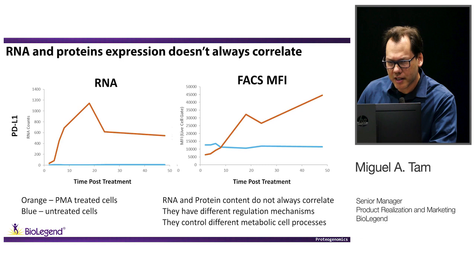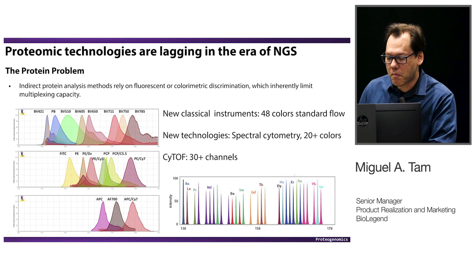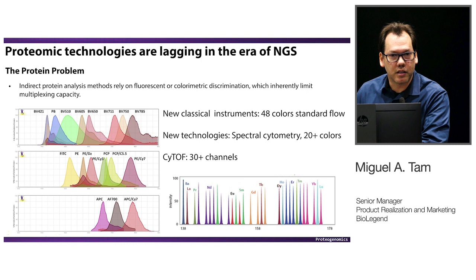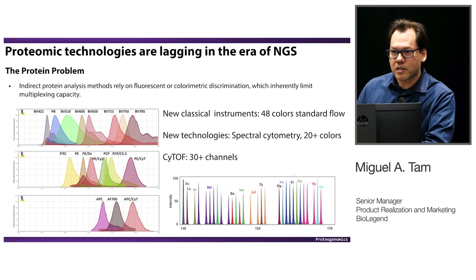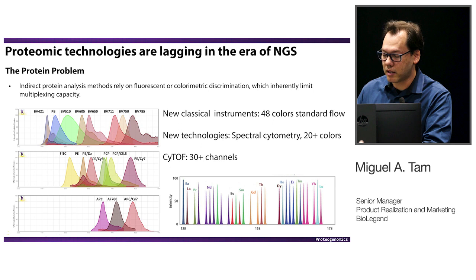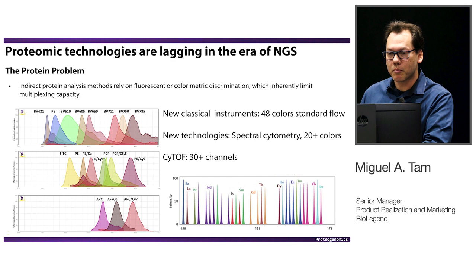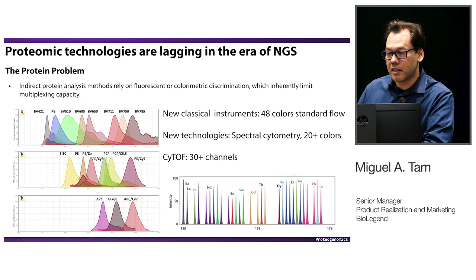The problem with protein analysis is that traditionally it has been limited by the technology enabling protein detection. For example, in flow cytometry, there is only a limited number of parameters you can multiplex for any particular sample. My colleague Kelly had a workshop on spectral cytometry yesterday and explained how this is expanding. But we are still limited to the number of either fluorophores, or in the case of CyTOF, metals, that you can detect in those instruments.